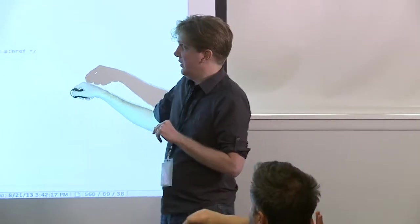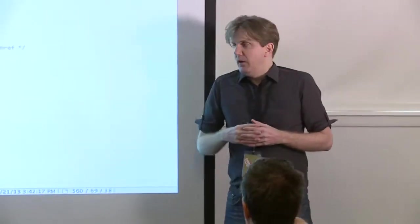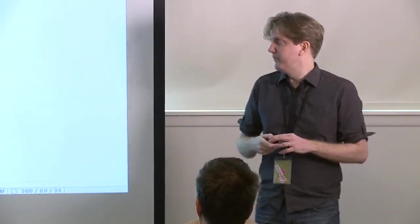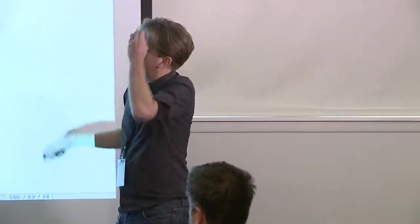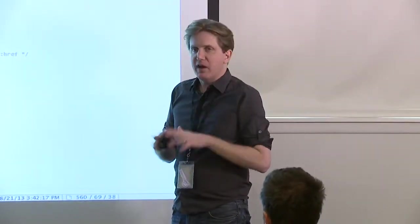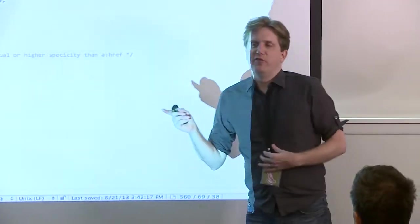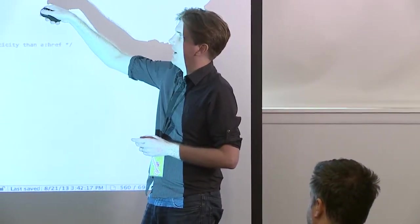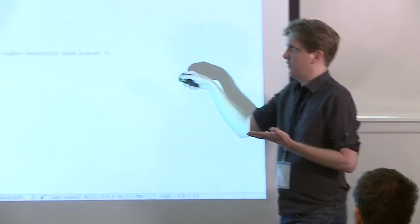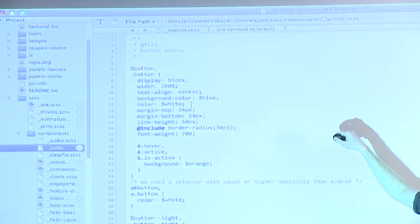Someone asks about the placeholder selector — why have both a regular class and a placeholder? Before Sass 3.2, extends worked by extending a specific class name, and it would look through the entire codebase and any place that class name was used, putting this class name in too — it could get sort of crazy, creating tons of selectors on rules you didn't intend.